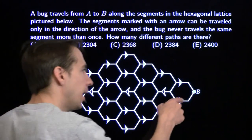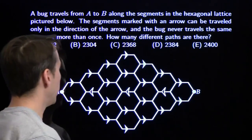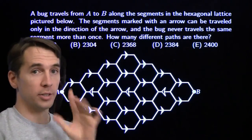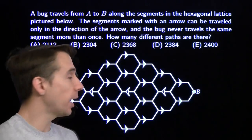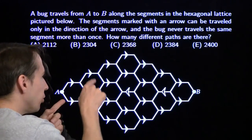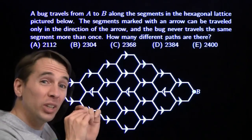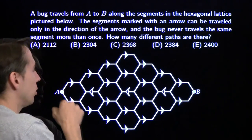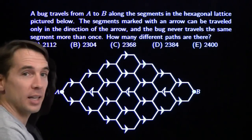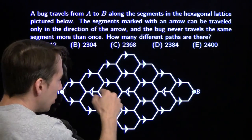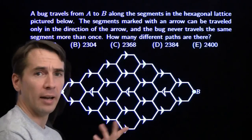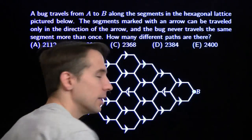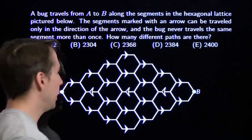We've got a bug walking from point A to point B. The bug can only walk on any single segment once — no backtracking. The segments with arrows mean the bug can only go in the direction of the arrow, while segments with no arrows can be traversed either way. The question is: how many ways can the bug get from point A to point B?